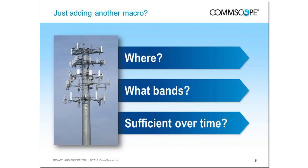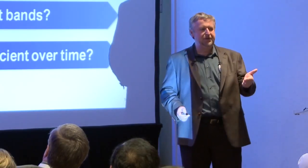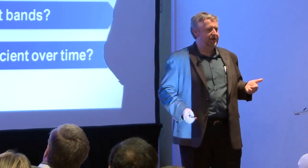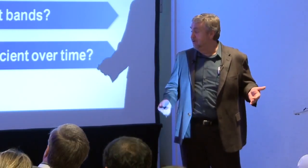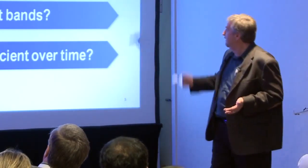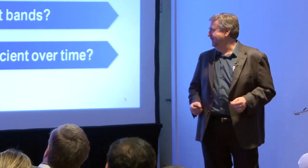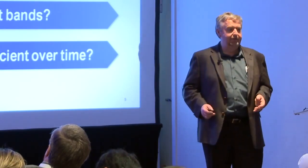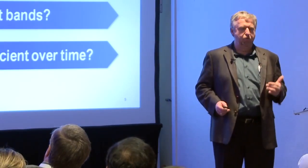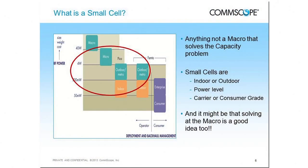So if you are out of capacity and everything you've known how to do in the past is to build a macro site, your natural inclination would be to build another macro. It's what we know how to do — we've been doing it for 25 years, everybody's an expert at it, it's a cookie-cutter approach. But the reality is: where do you put it? There aren't that many places to put new macros, especially where you need the capacity. What bands would you use, and how long would it last before running out of capacity again? That's where the topic of small cells comes into play.